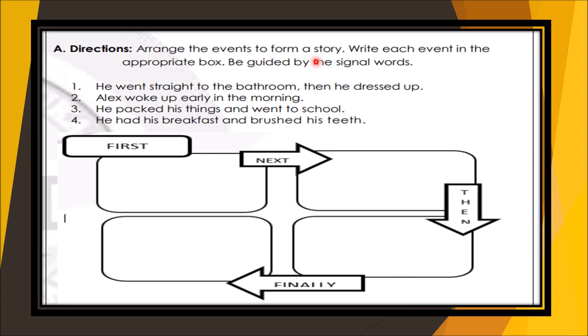Here's another one. You have to arrange the events to form a story. Write the events in the appropriate box, guided by the signal words. Number one: he went straight to the bathroom, then he dressed up. Number two: Alex woke up early in the morning. Number three: he packed his things and went to school. Number four: he had his breakfast and brushed his teeth.